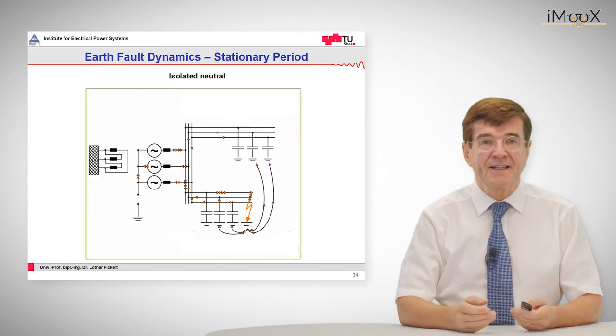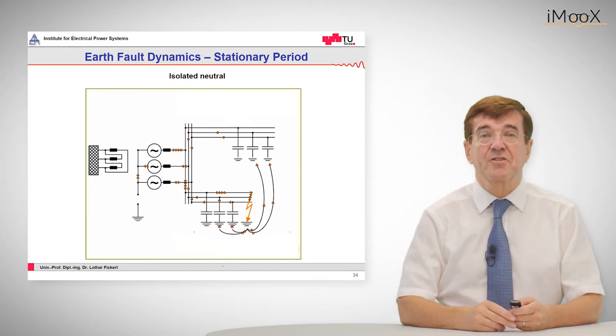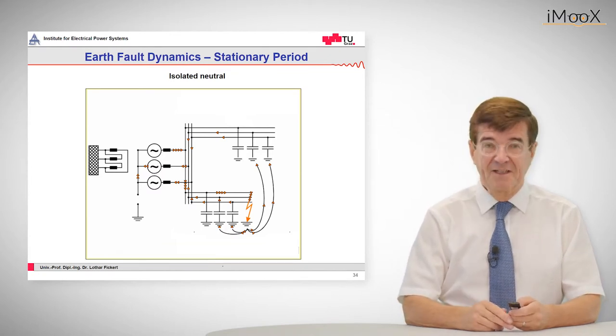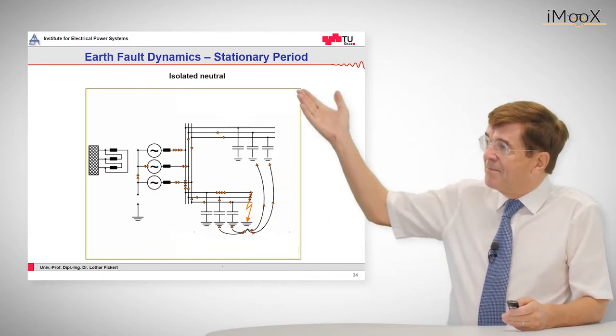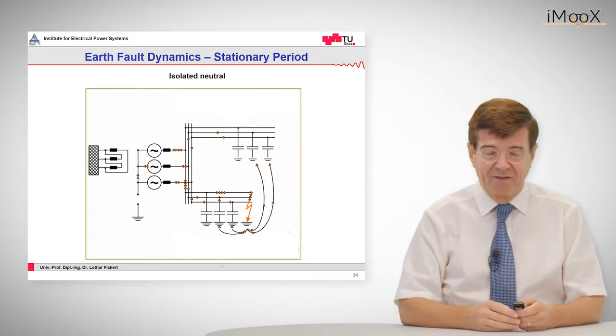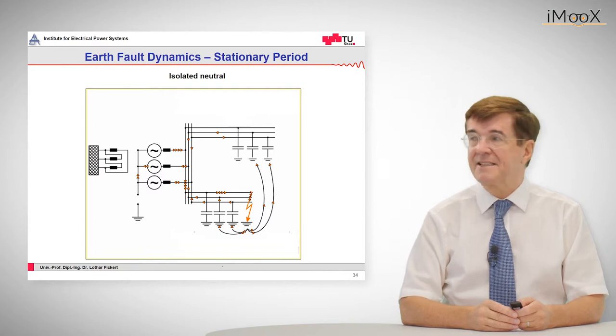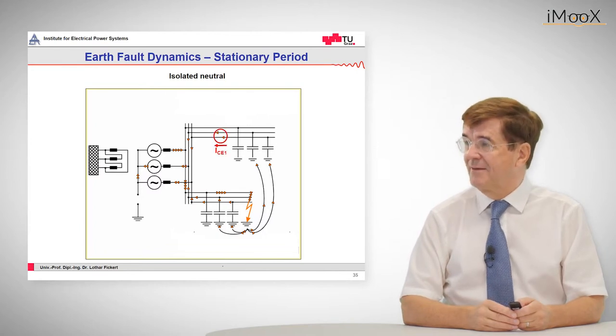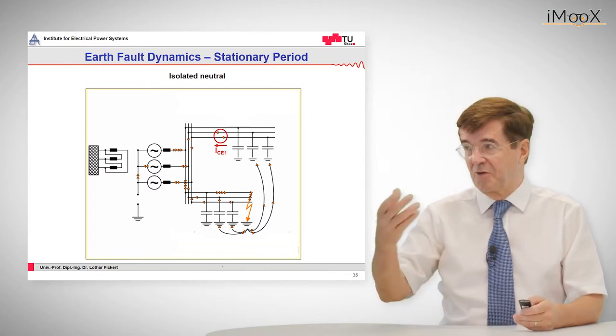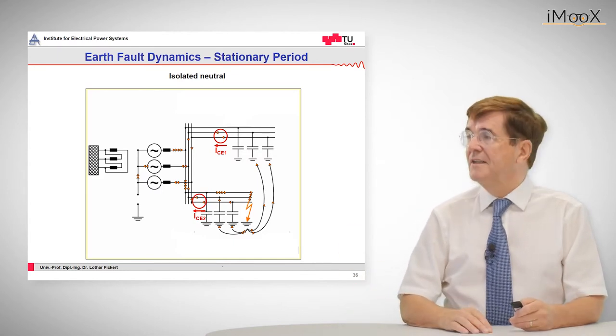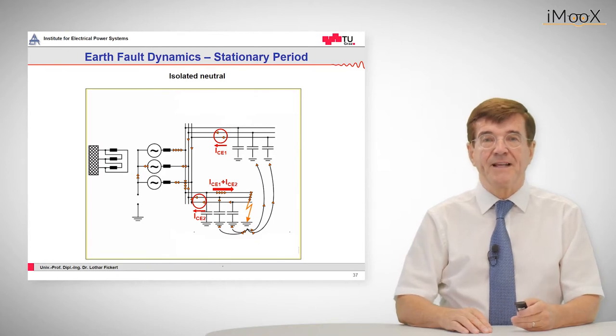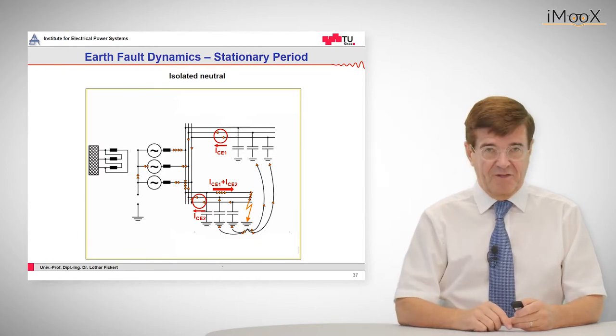The solution is again in the picture we have already seen. The solution is capacitive currents. These capacitive currents flow from ground up into the high voltage line, into the faulty phases and these currents add up. So we have capacitive current of feeder one, the capacitive current of feeder two, which in this case is the faulty feeder. These currents add up and they make up for the fault current.